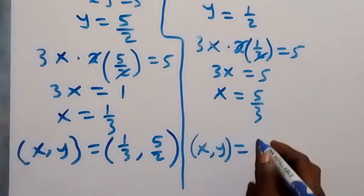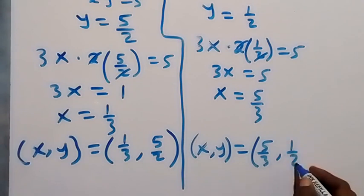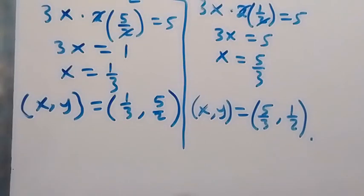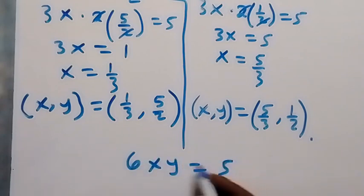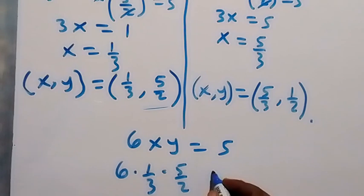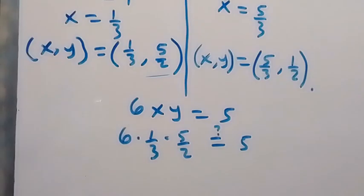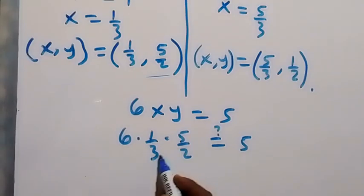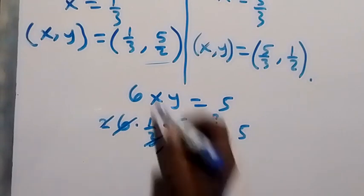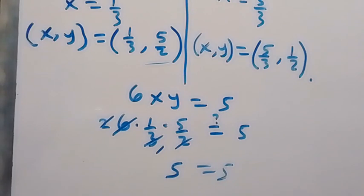So the set of solutions is (x, y) = (1/3, 5/2) and (5/3, 1/2). Let's verify the first solution in equation 2: 6 times (1/3) times (5/2). The 3 cancels and the 2 cancels, leaving 5, which equals 5. This confirms the first solution.